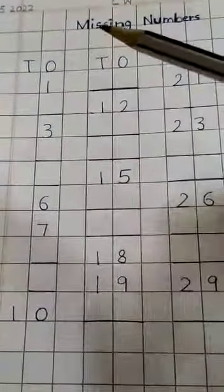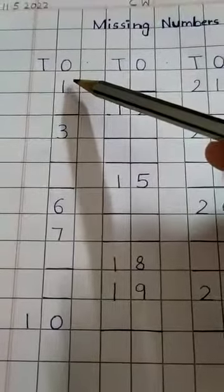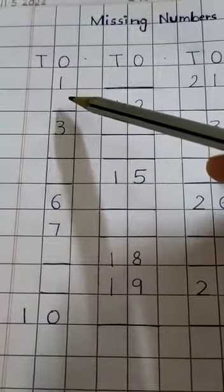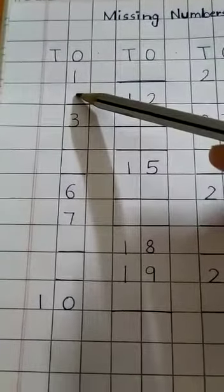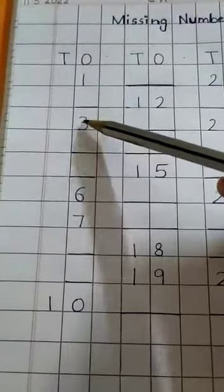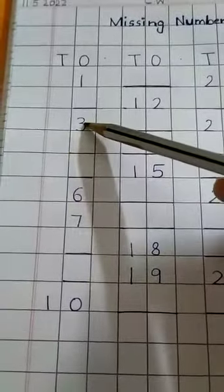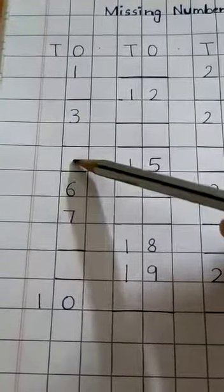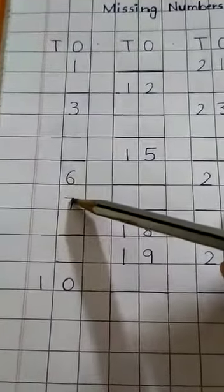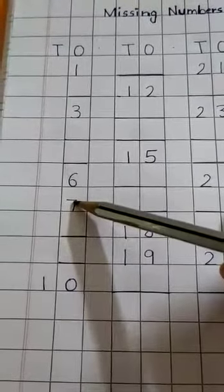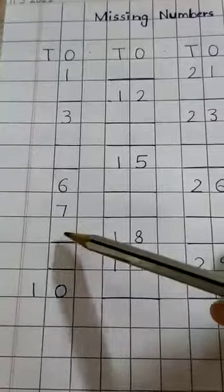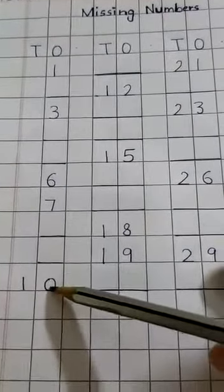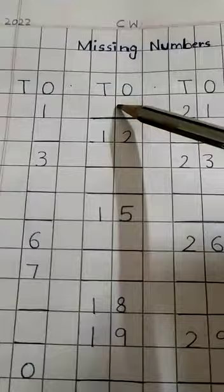So let's start. One, what comes after one? One, two. Yes. One, two, three, four. Three, four, five, six, seven. What comes after seven? Eight. Six, seven, eight, nine, ten. Nine, ten, eleven.